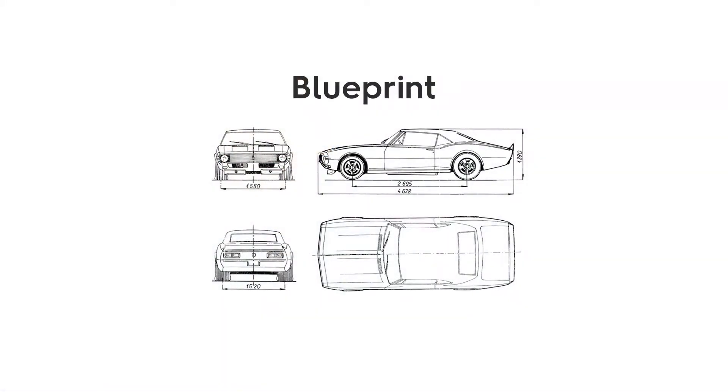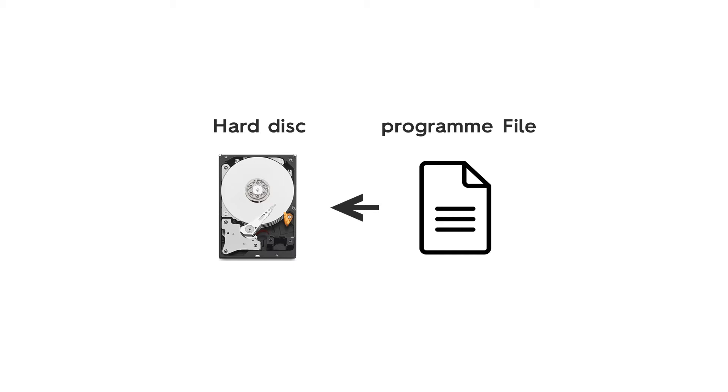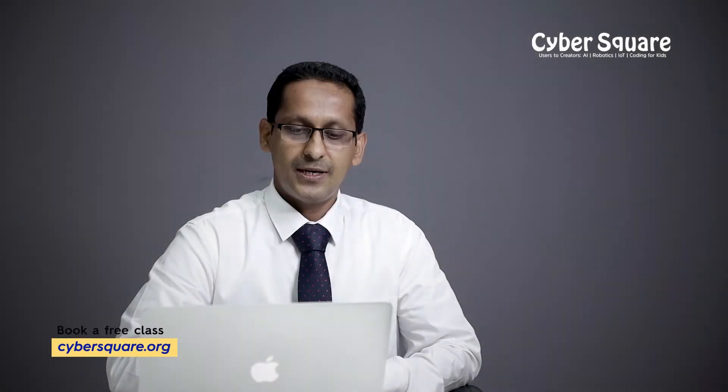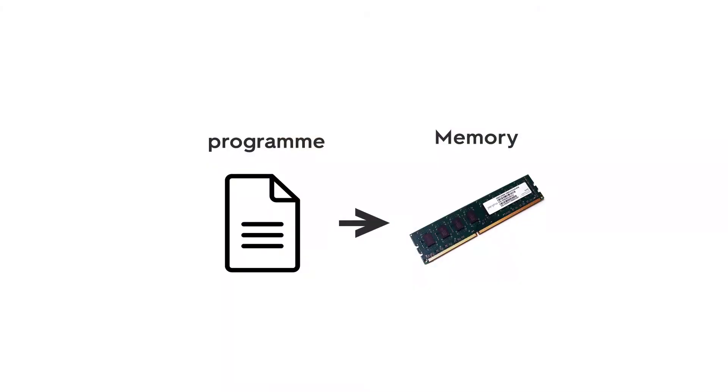The definition of class is a blueprint for creating objects. When we create a class, it is stored as a program in your hard disk. But the structure of the class is loaded in the memory at the time of execution of the program. It is called an object.